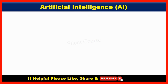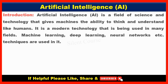Artificial Intelligence. Introduction: Artificial Intelligence — AI is a field of science and technology that gives machines the ability to think and understand like humans. It is a modern technology that is being used in many fields. Machine Learning, Deep Learning, Neural Networks, etc. techniques are used in it.